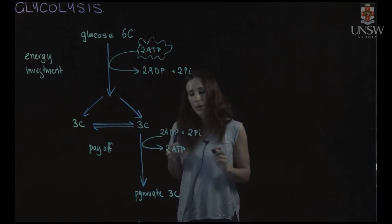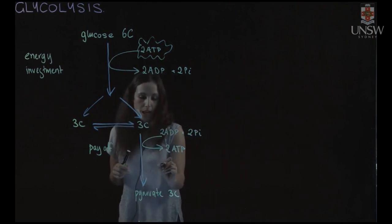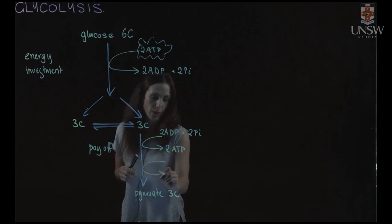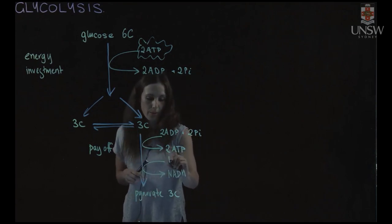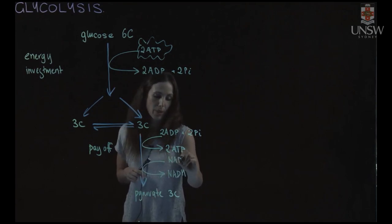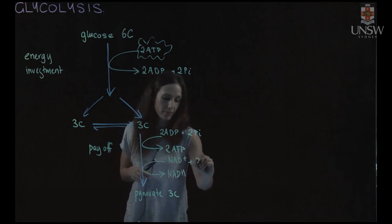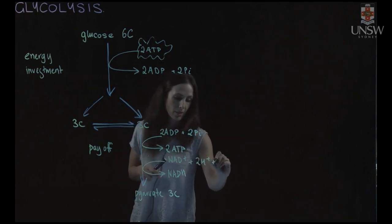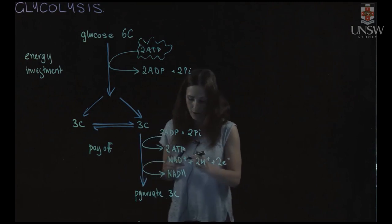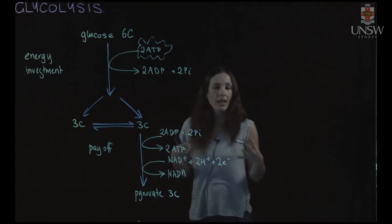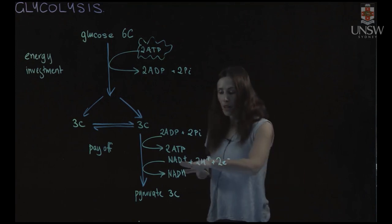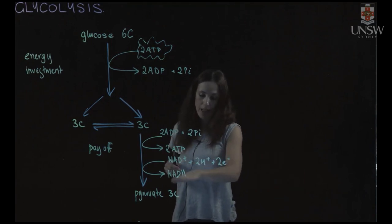And we also get electrons transferred. So we have electrons transferred onto electron carrier to give us NADH. So we have NAD plus. And here's our pair of electrons. So remember as glucose is oxidized those electrons are being transferred onto our electron carrier to give us NADH.